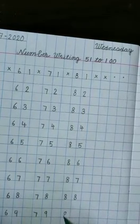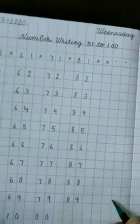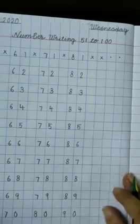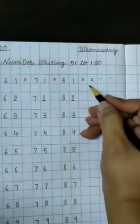88, 89. And in last, write 90. Now here put two cross.